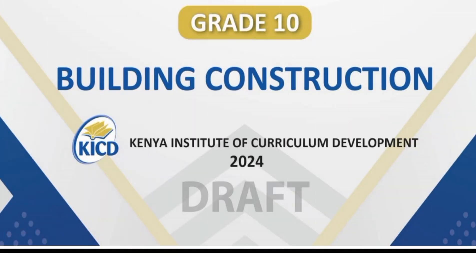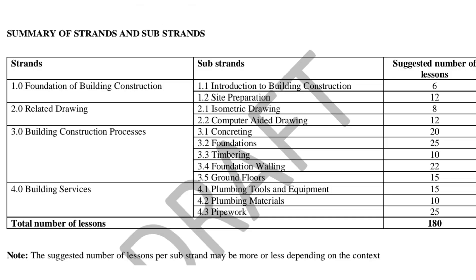Building and construction is another STEM learning area. The first strand is foundation of building construction, with substrands: introduction to building construction and site preparation. The second strand is related drawing, covering isometric drawing and computer-aided drawing. The third strand is building construction processes, with substrands: concreting, foundations, timbering, foundation walling, and ground floors. The fourth strand is building services, covering plumbing tools and equipment, and plumbing materials and pipework — all in 180 lessons.